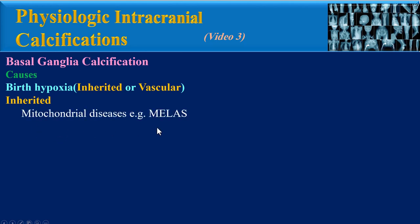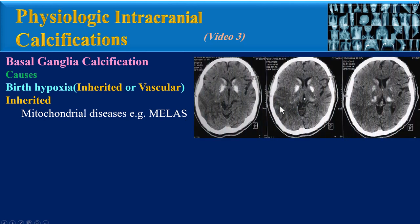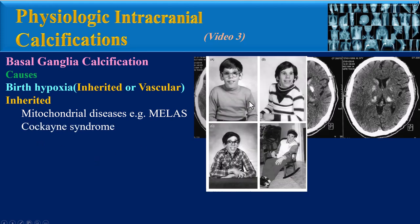The inherited causes of birth hypoxia include mitochondrial diseases, for example MELAS — MELAS syndrome, or mitochondrial encephalopathy, lactic acidosis, and stroke-like episodes. These axial CT images relate to a patient with MELAS syndrome. We can see bilateral calcification in the basal ganglia and parieto-occipital hypodensity consistent with stroke-like episodes, as proved by MRI.